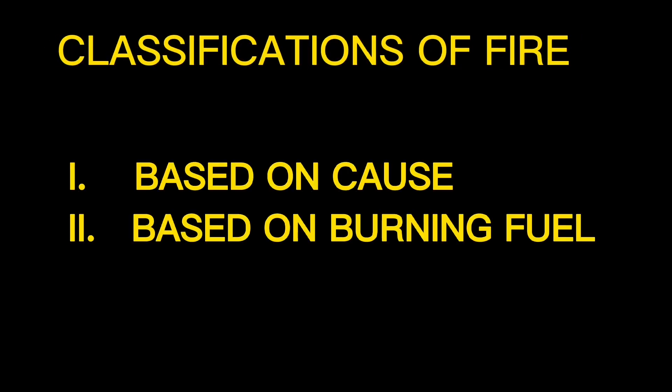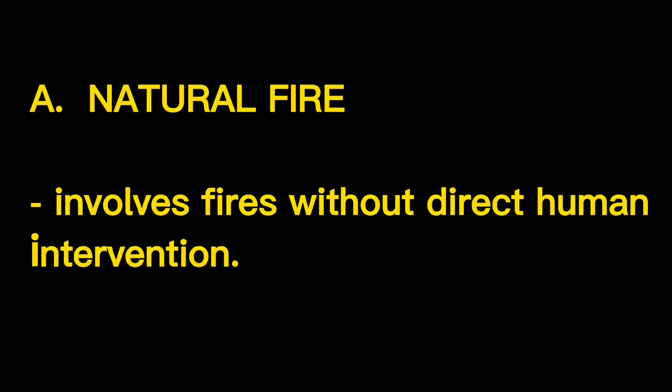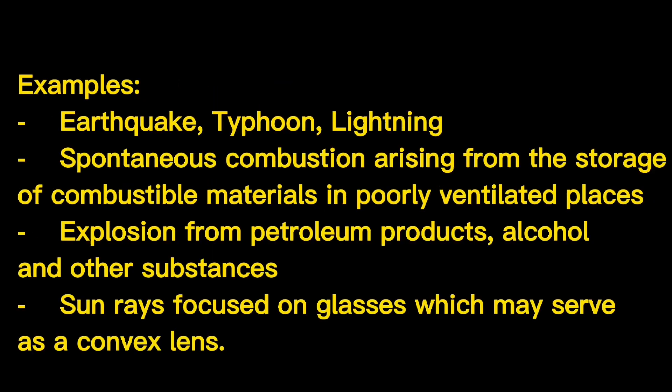Classifications of fire — based on cause: A. Natural fire or providential. B. Accidental fire. C. Intentional fire or incendiary. D. Undetermined. Natural fire involves fires without direct human intervention. Examples include earthquake, typhoon, lightning, spontaneous combustion arising from the storage of combustible materials in poorly ventilated places, explosion from petroleum products or alcohol, and sun rays focused on glasses which may serve as a convex lens.